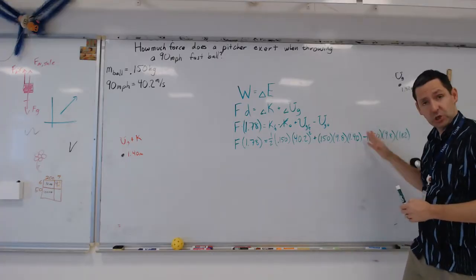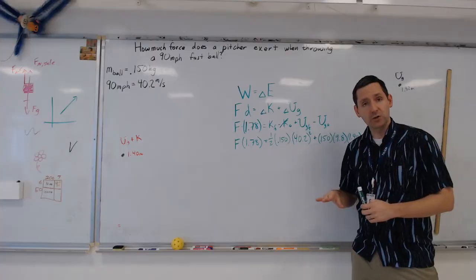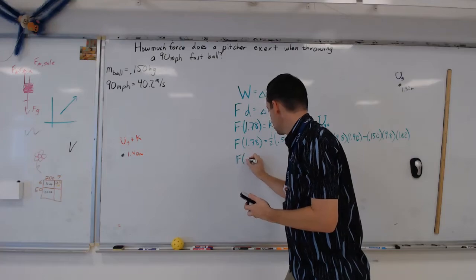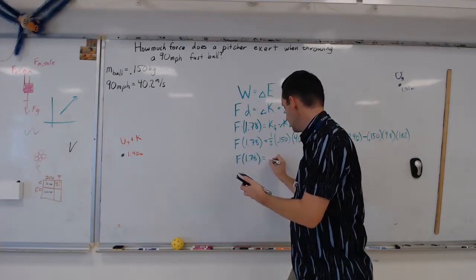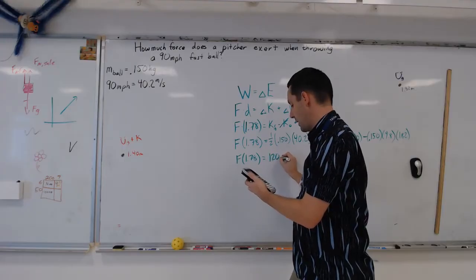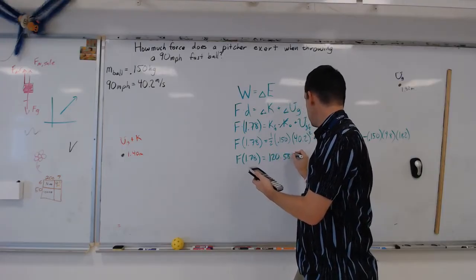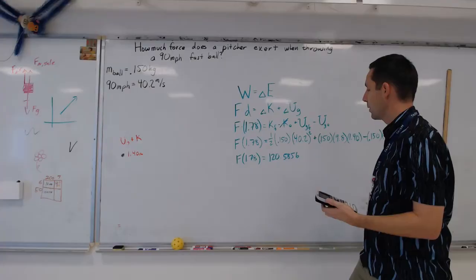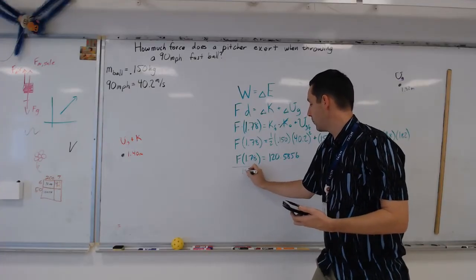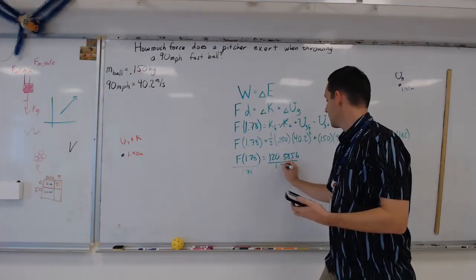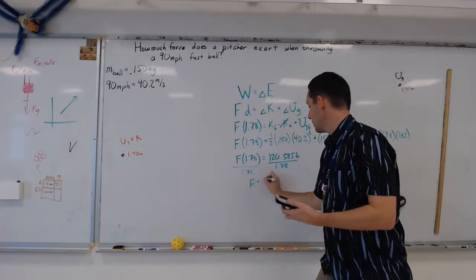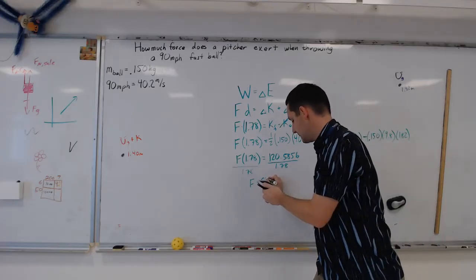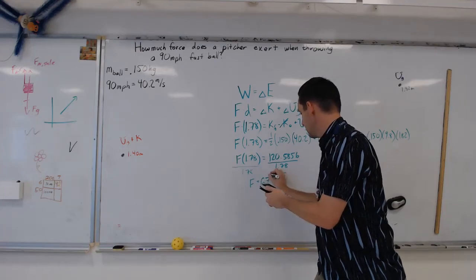So at this point, we can actually solve for all the numbers, and then that'll allow us to eventually solve for F. So I get that the force times 1.78 is equal to 120.5856. That would be a change of energy. Then we divide both sides by 1.78. And we get that the average force required is 67.7 newtons.